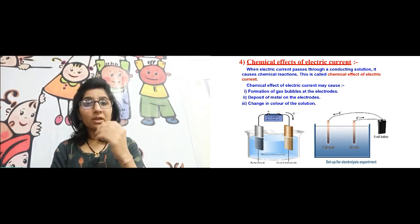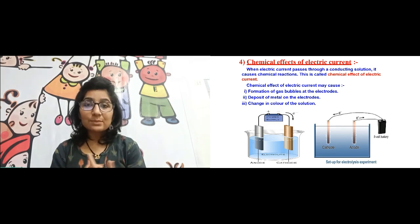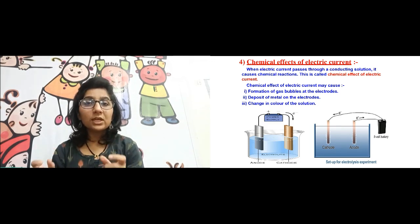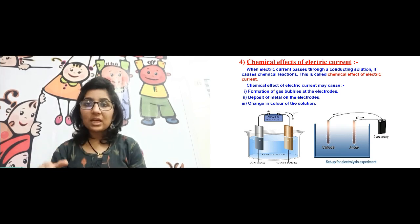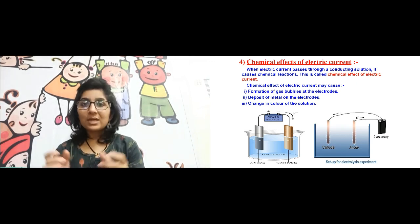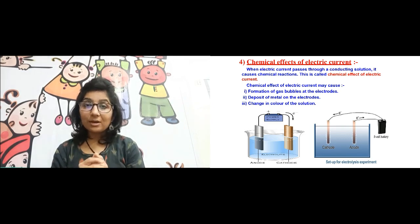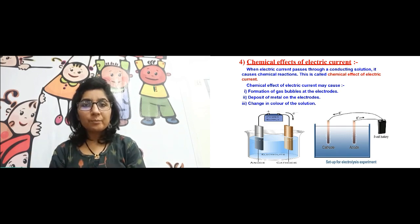Now, exactly what are these chemical effects and how will we understand that a chemical change has occurred in the liquid? We will understand it either by the formation of gas bubbles near the electrodes. Now what are electrodes? The rods that we dip into the liquid are called electrodes. The liquid we have taken is the electrolyte. Those rods must also be conductors — we will use either metal or graphite, since graphite is a good conductor of electricity.